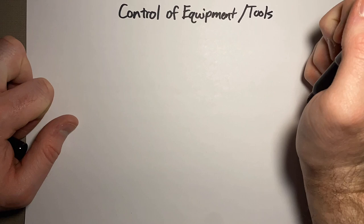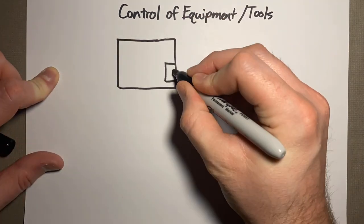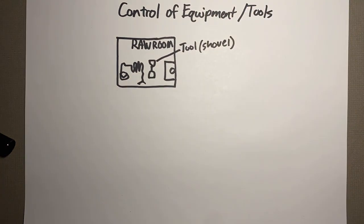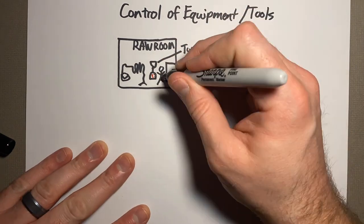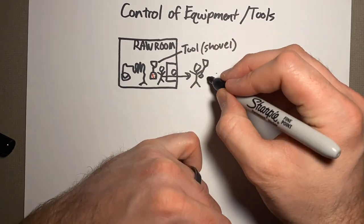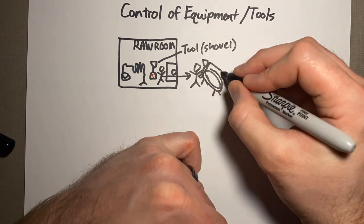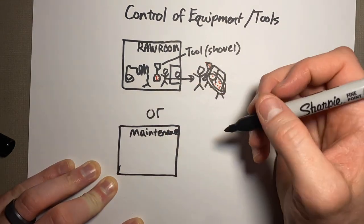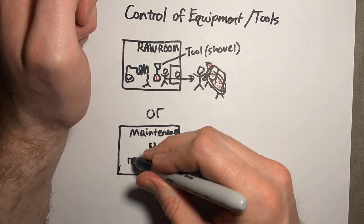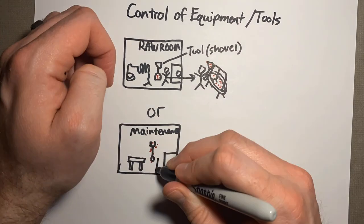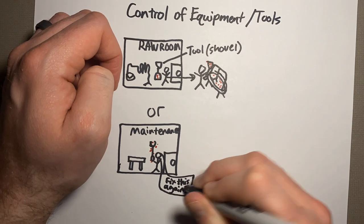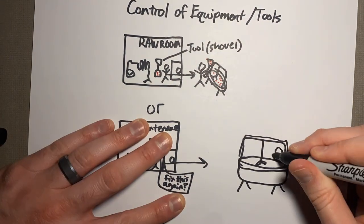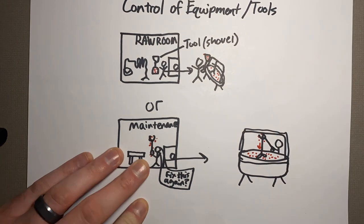Concept four: controlling your equipment and tools. If you have a finished product tool stored in your raw room, there could be a chance of contamination — and then you bring it out, you're shoveling curd, and it's contaminated. Or say you have a wrench from the maintenance shop and you aren't going through the proper transition zone and cleaning it properly — that could be a source of contamination as well.